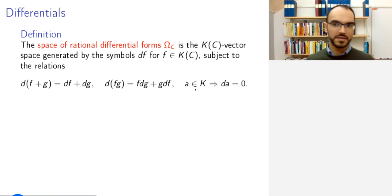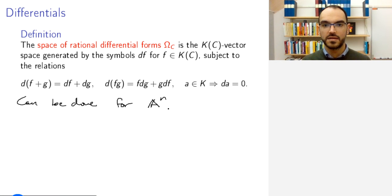Indeed, this can be defined in a much greater generality than for projective curves. For example, I can define exactly the same game for affine space. So, let's see what that gives me. Then the coordinate ring of affine space, the ring of regular functions, this is just the polynomial ring.